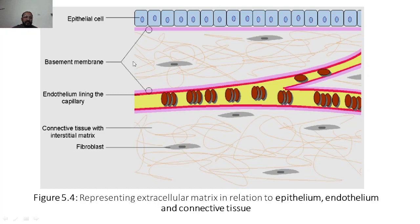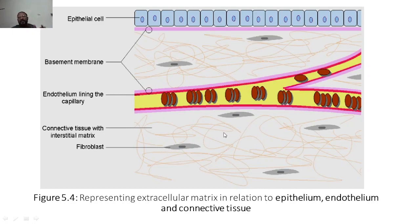The basement membrane is there for epithelial cells, and lining is required for endothelial cells. For the membrane, connecting tissue with interstitial matrix and fibroblasts — for all these things to be put together, we need ECM.